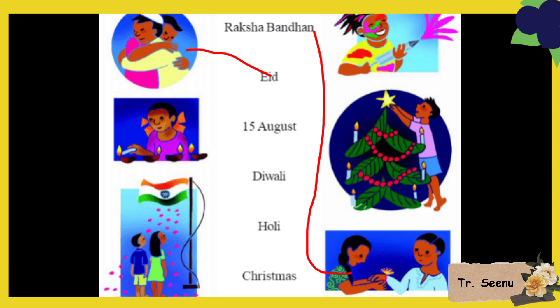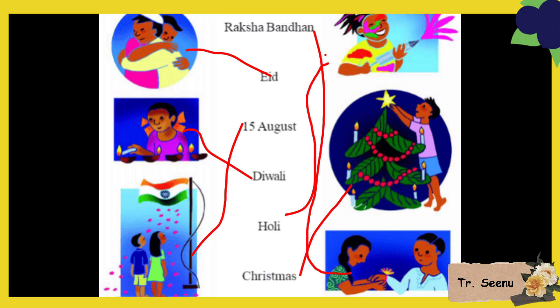Eid is what we celebrate when Ramadan ends. Next is 15th August - Independence Day - so this will match with that image. Next is Diwali, the festival of light, when we put diyas - match it here. Next is Holi, the festival of colors, when we play with many colors. Next is Christmas, when we decorate the Christmas tree. This is how you match the festivals with their images.